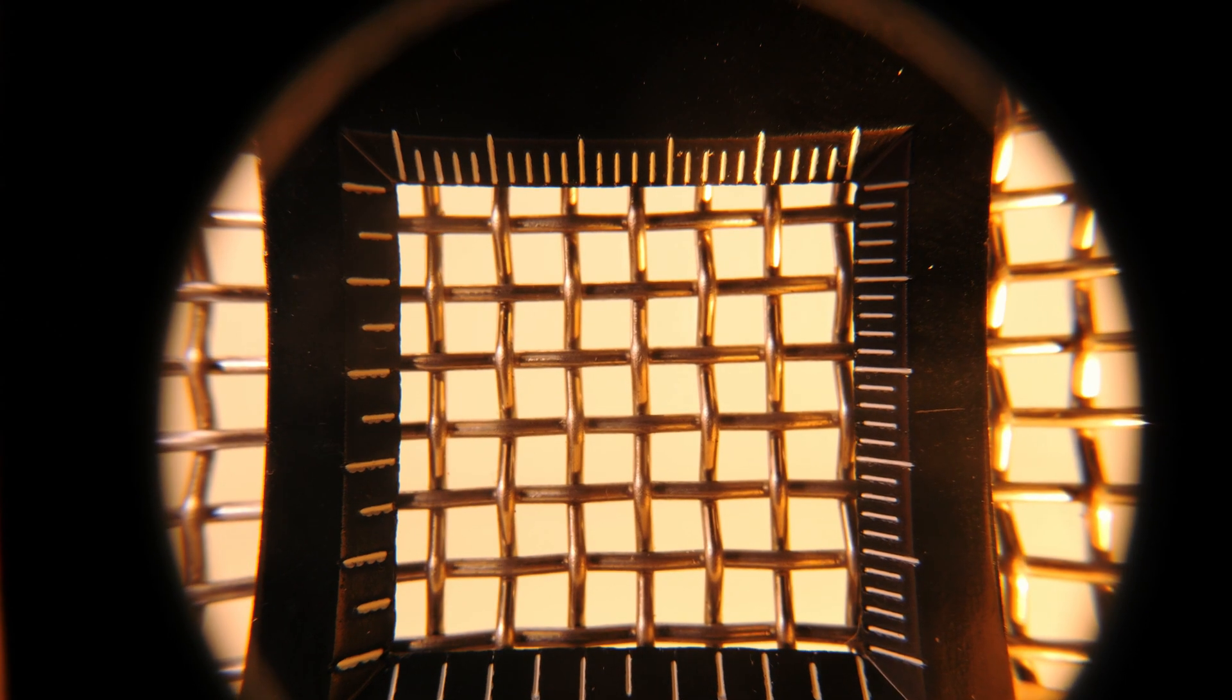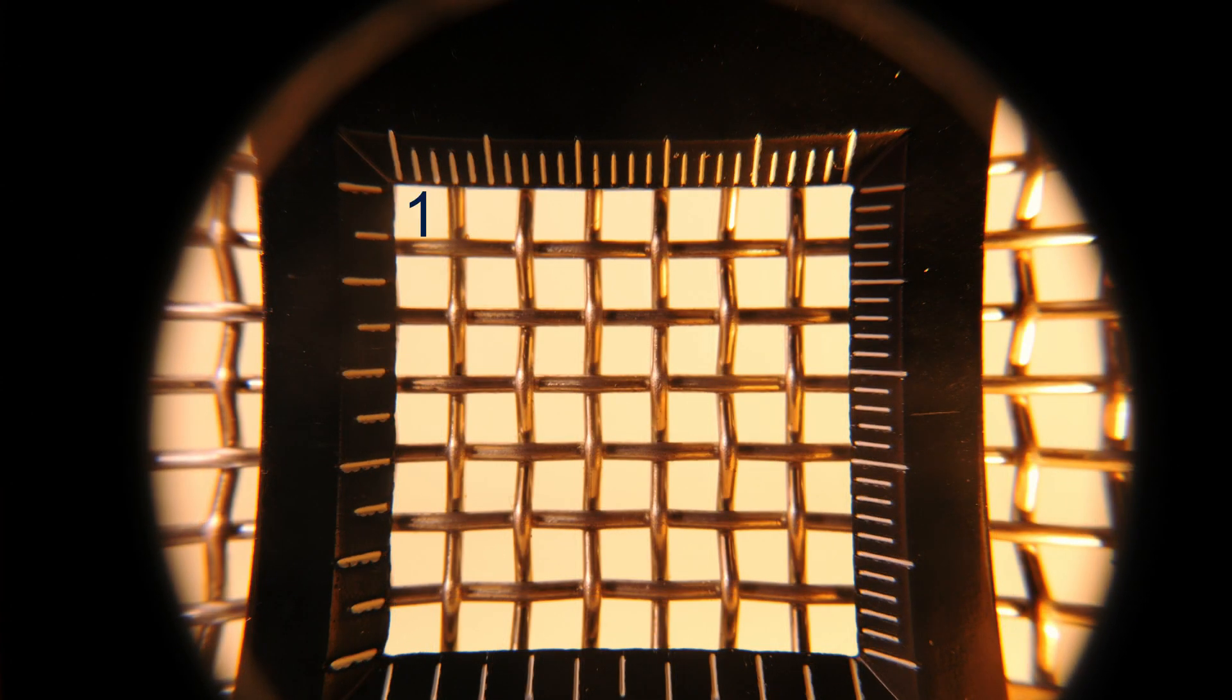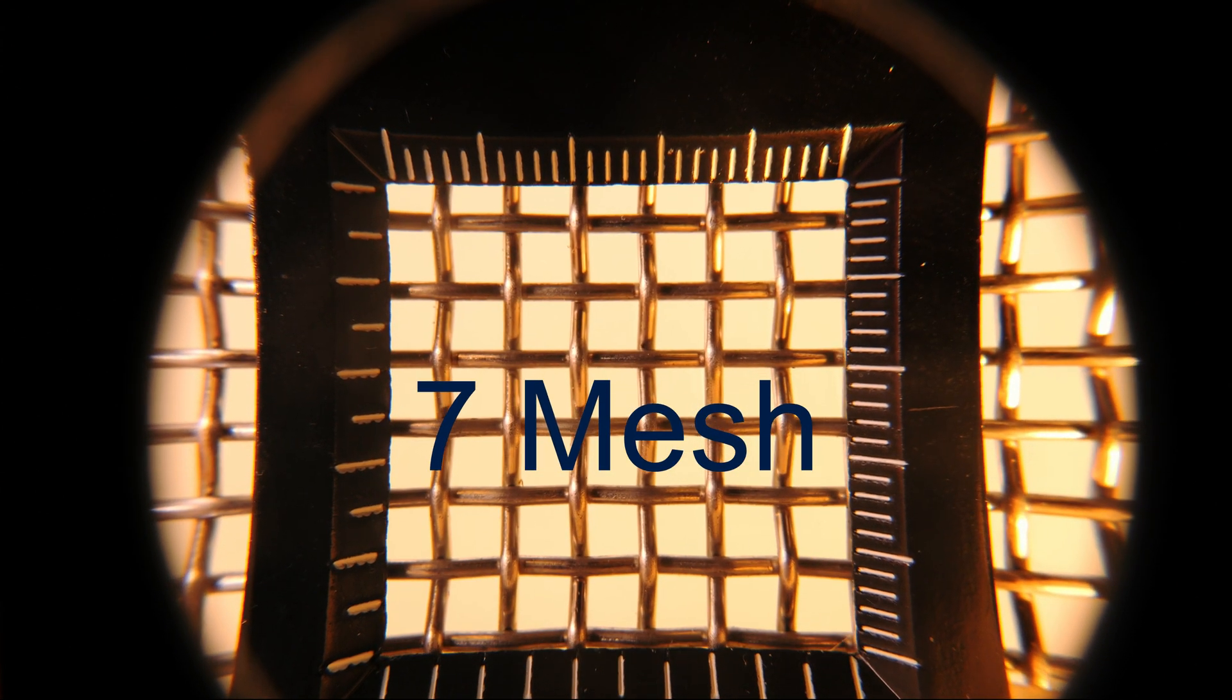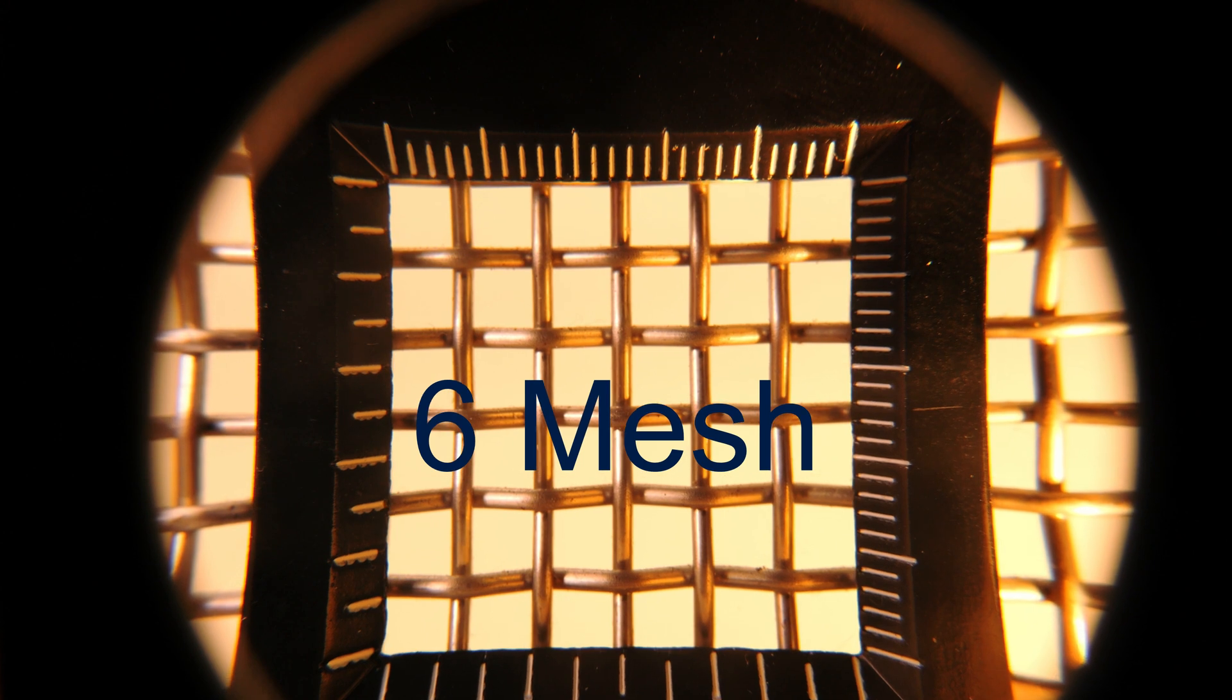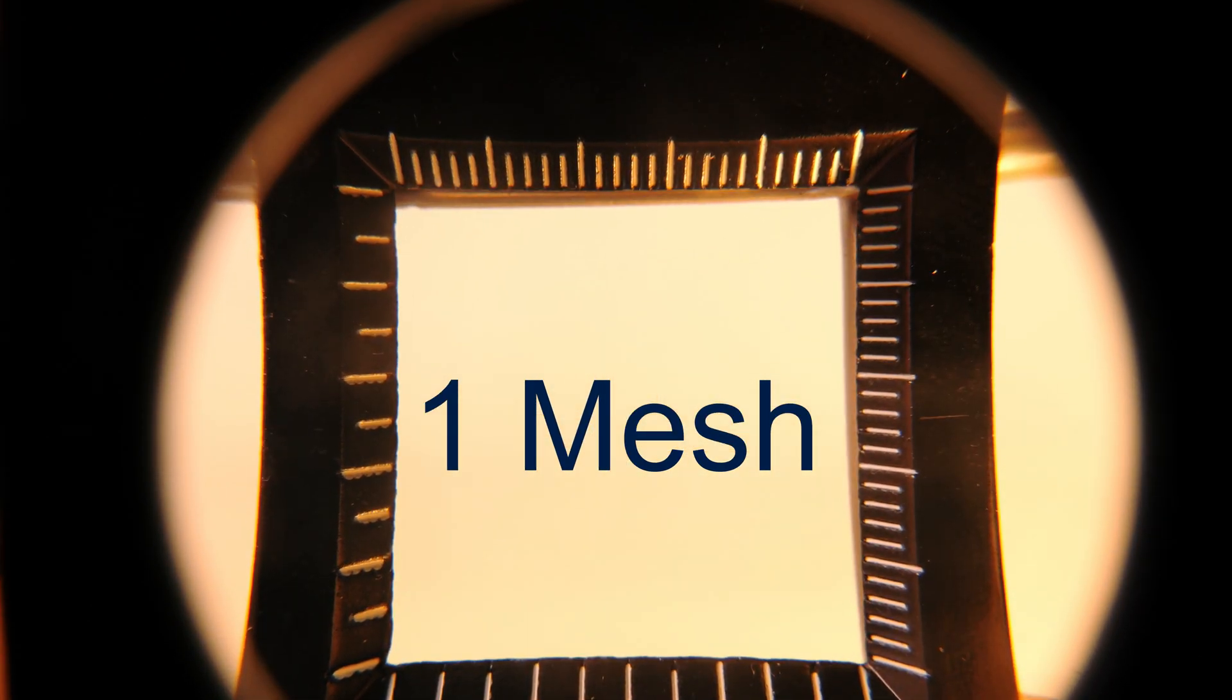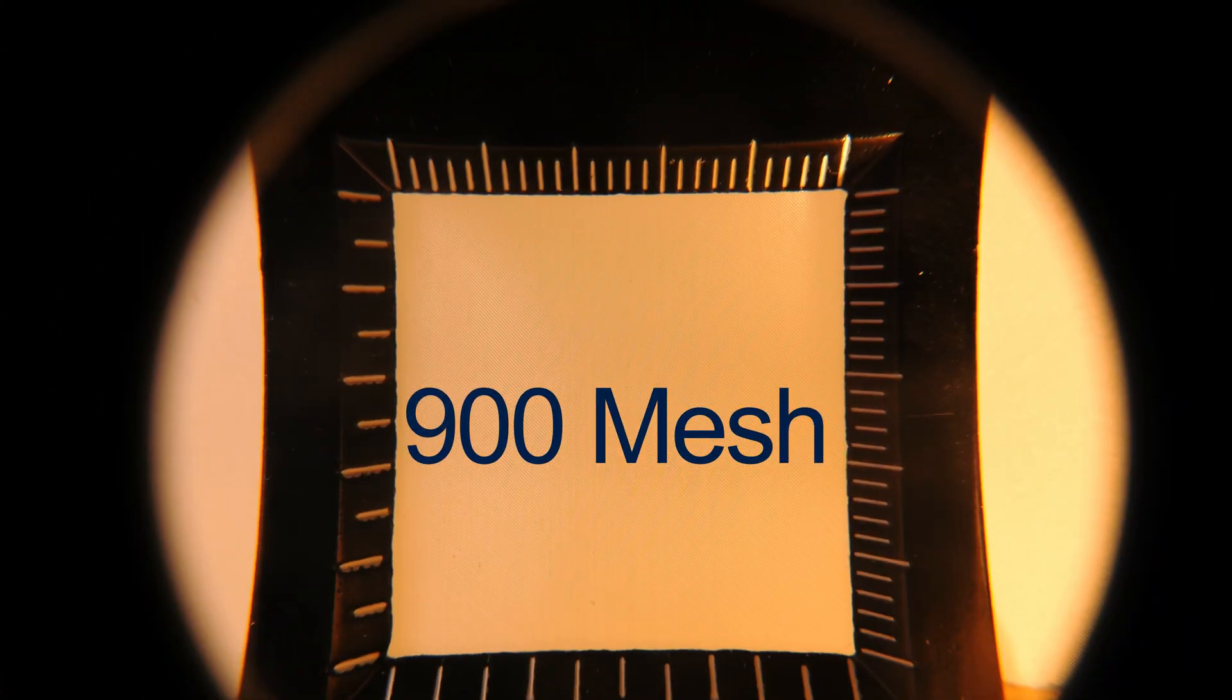If you set the counting glass on the mesh and look through it, you will see this. It makes it much easier to focus on the opening. So if we were to count the number of openings from top to bottom, we have one, two, three, four, five, six, seven openings, which means this particular square weave is a seven mesh. And the closer to the number one it gets, the bigger the openings.